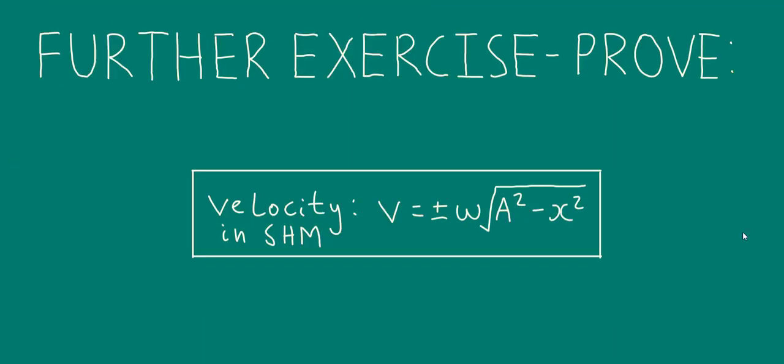One further useful example is for you to try and prove that the velocity is given by plus or minus omega, the angular frequency, times square root of a squared minus x squared. This is probably a formula you're familiar with, probably seen on the formula sheet. But, as I said, I think it's quite useful for you to try and prove this yourself.